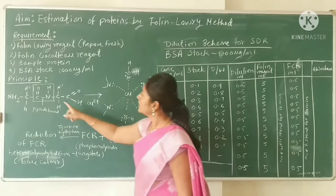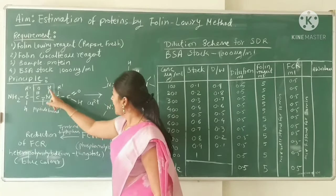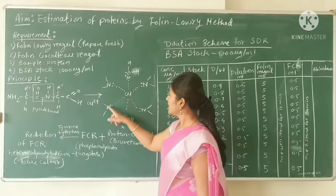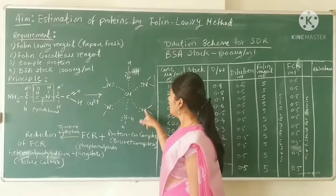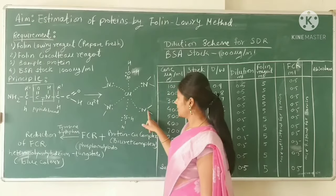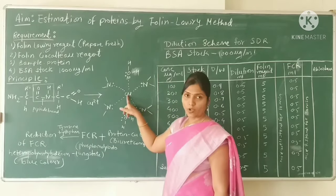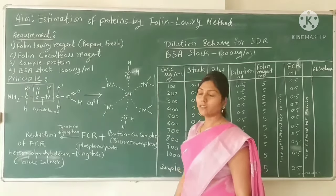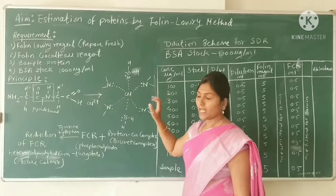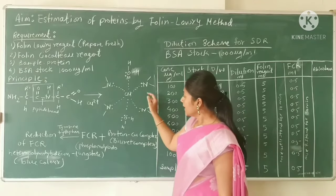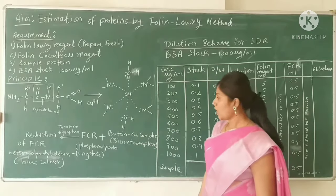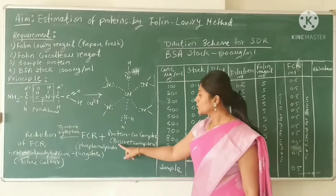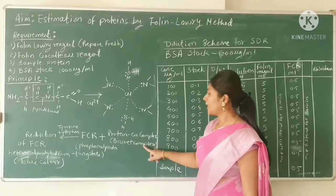The H of the nitrogen in the peptide bond is displaced, forming a protein-copper complex. You can see that copper sits at the center coordinated by 4 nitrogen atoms in a tetrahedral arrangement — so chelation of the protein takes place. The complex produced is called the protein-copper complex, also known as the biuret complex.